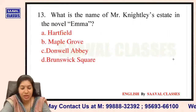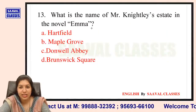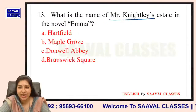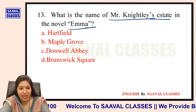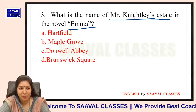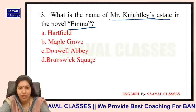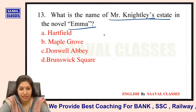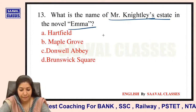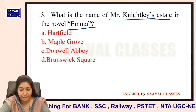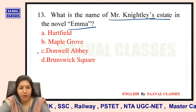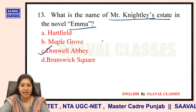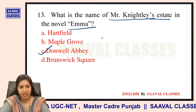Question number 13: What is the name of Mr. Knightley's estate in the novel Emma? Options are Hartfield, Maple Grove, Donwell Abbey, ya Brunswick Square? It is Donwell Abbey. The name of Mr. Knightley's estate is Donwell Abbey.